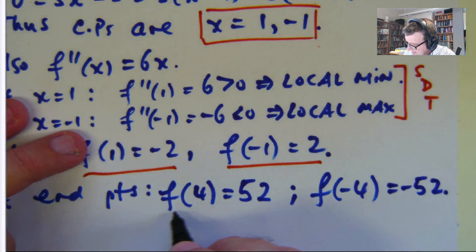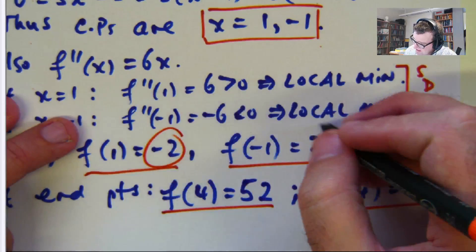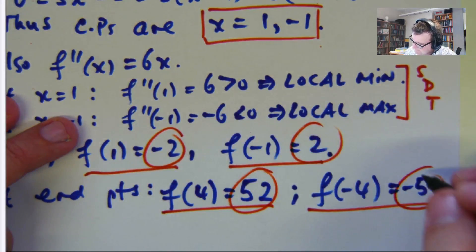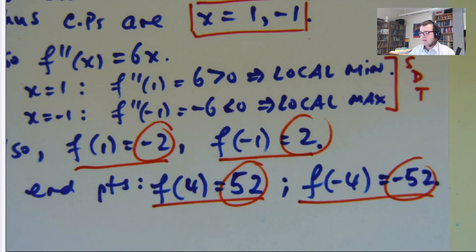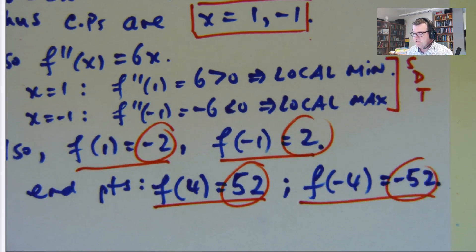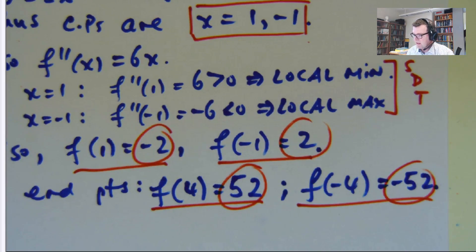So we've got these values. The biggest one is 52. The smallest one is negative 52. These are the global max, global min, respectively.